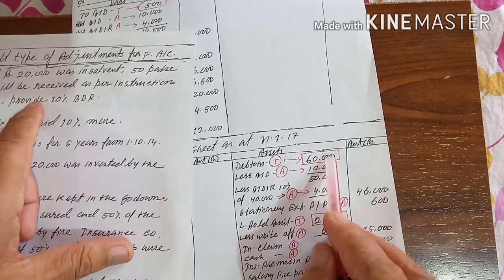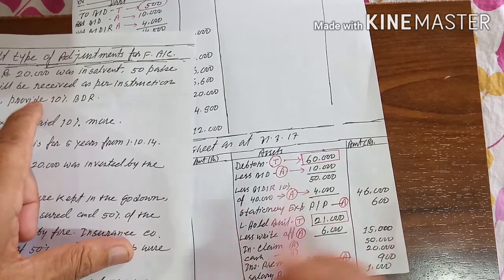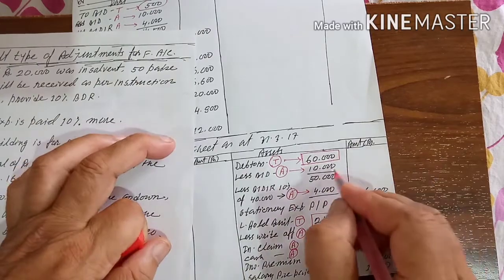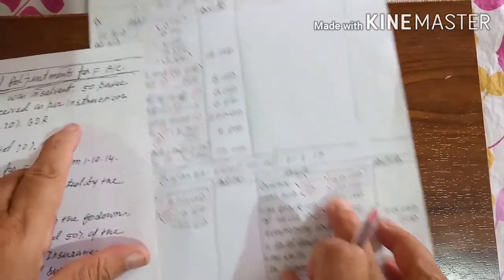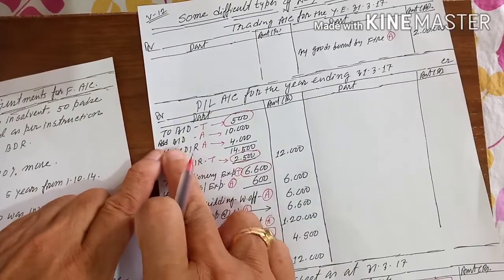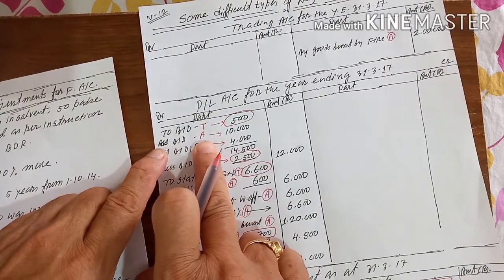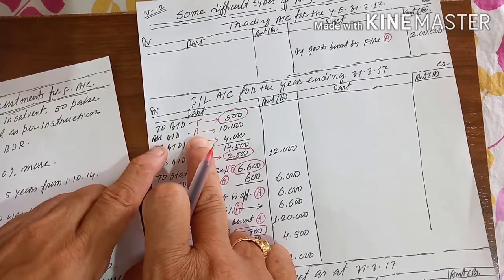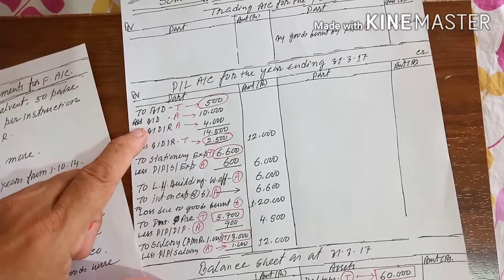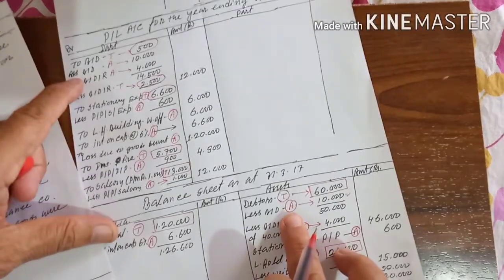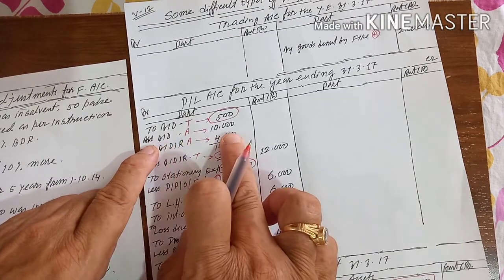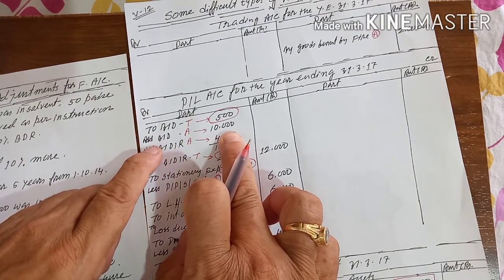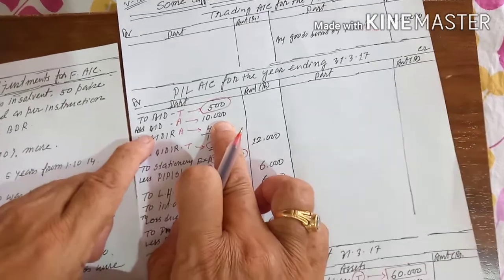So now 60,000 minus 10,000 equals 50,000. This is your bad debt from the adjustment — the first posting. Second posting: add bad debt of adjustment 10,000. You add it with the bad debt of rupees 10,000. So bad debt — first effect and second effect are over.